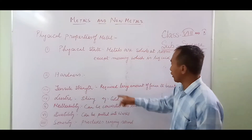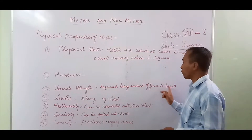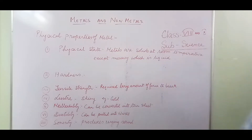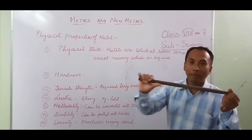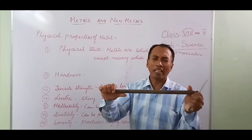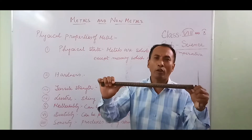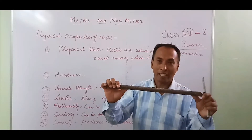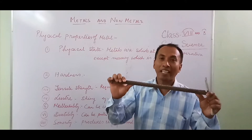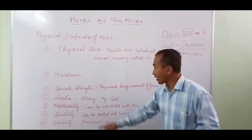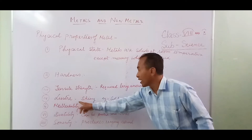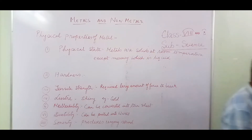The next property is tensile strength — it requires a large amount of force to break a metal. For example, this iron bar cannot be broken easily; it will require a large amount of force. That property is called tensile strength.